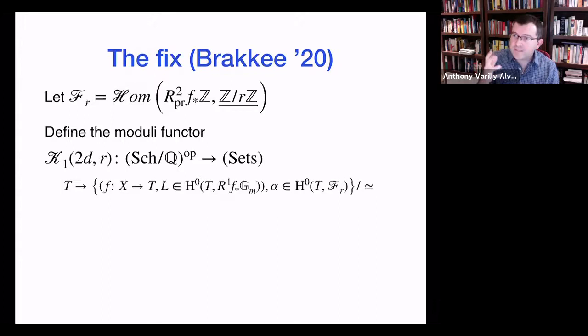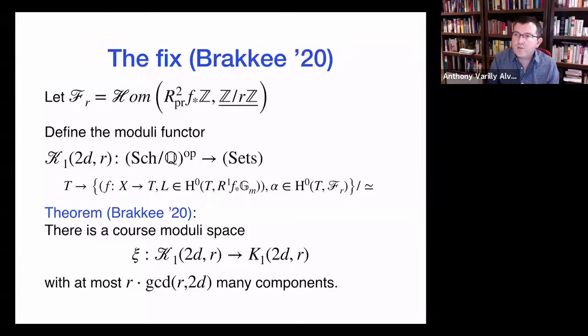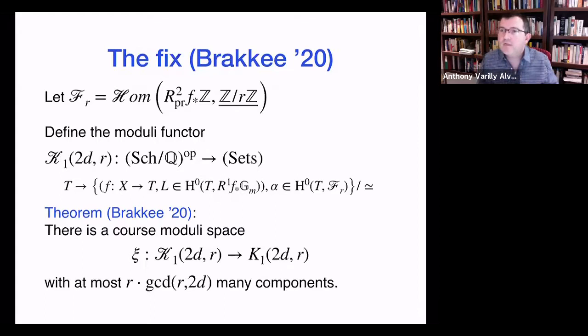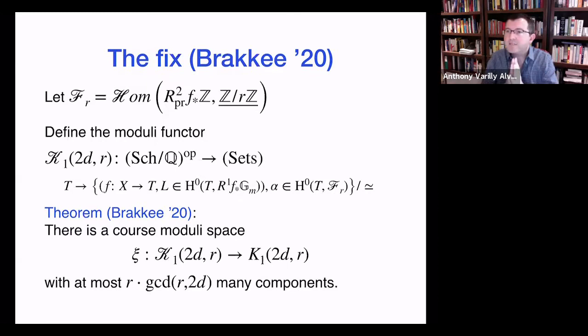The correct moduli functor tracks a smooth proper family, the polarization, and a class in the relative version of Hom(primitive cohomology, Z/rZ). Emma showed there is in fact a coarse moduli space of this type, and she bounded the number of components on this moduli space by r. Here r is a positive integer, not necessarily prime. However, this bound is not sharp — in one of the first cases, the bound gives at most four components, but really two of them get identified. So there is more work to be done.